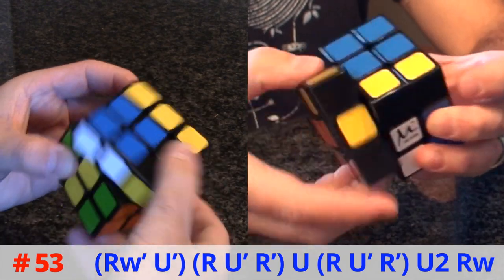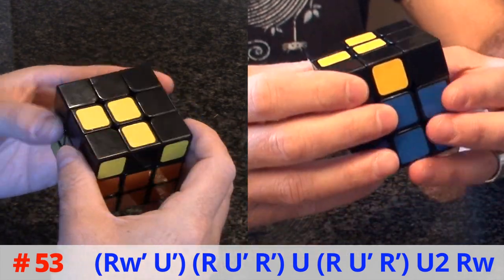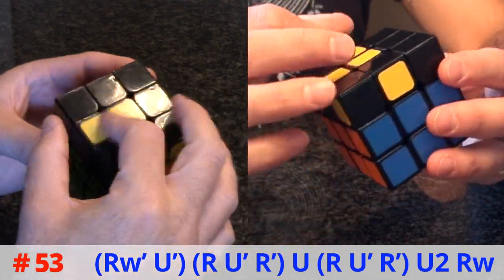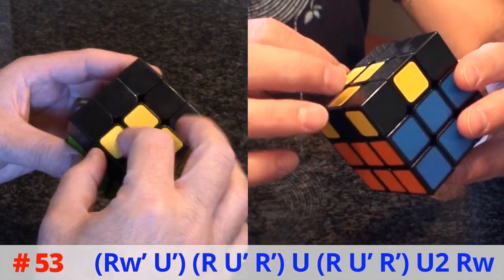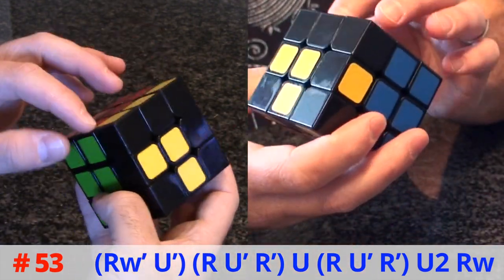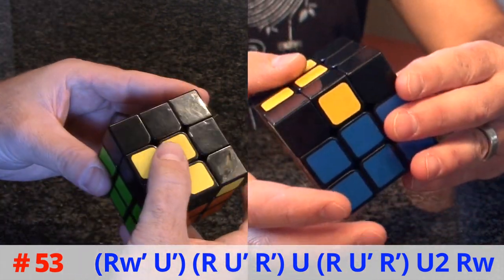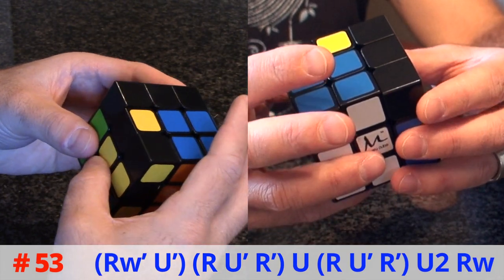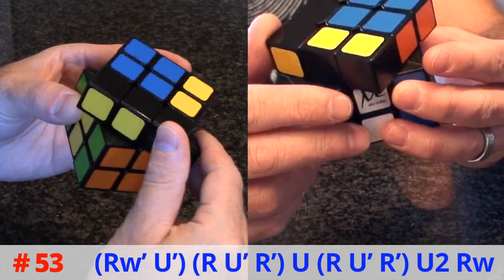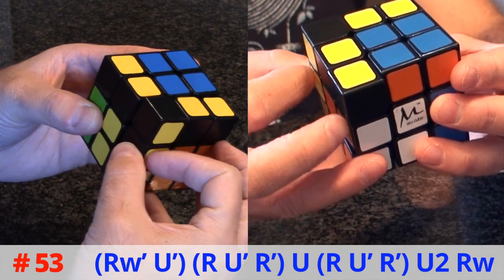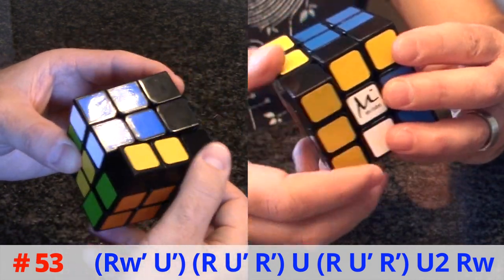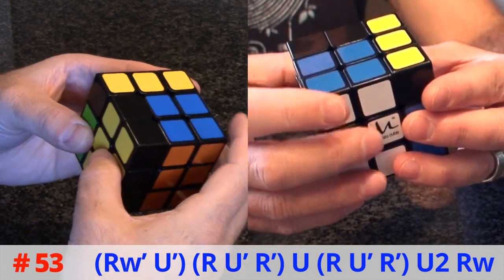Again, bar on the left, L towards the right bottom. Right wide prime U prime R U prime R prime U R U prime R prime U2 right wide.